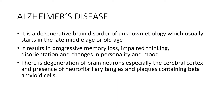Alzheimer's disease causes the maximum number of dementia cases. It is a degenerative brain disorder of unknown etiology which usually starts in late middle age or old age, resulting in progressive memory loss, impaired thinking, disorientation, and changes in personality and mood. There is degeneration of brain neurons, especially the cerebral cortex, and presence of neurofibrillary tangles and plaques containing beta-amyloid.